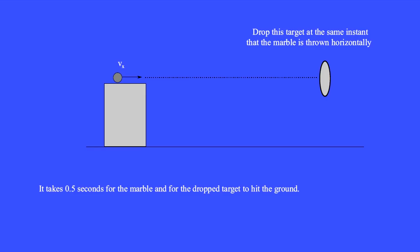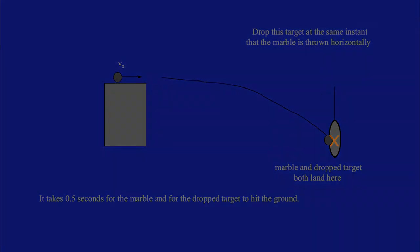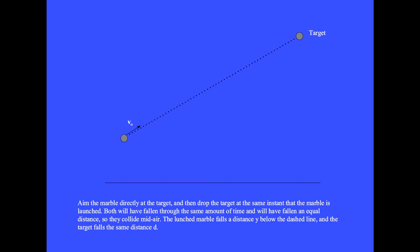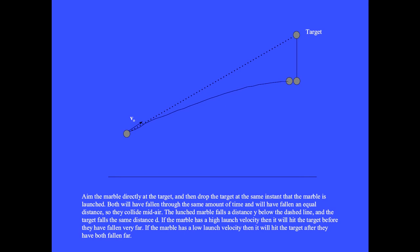One way to hit a target is to first aim horizontally straight at the target. At the same instant the marble is thrown horizontally, the target is dropped. Both the marble and the target will fall by the same distance. If the speed of the marble is really high, it will hit the target before they have dropped very far. If the speed is slower, then both will fall a greater distance before they meet. It works even when the target begins higher than the marble: the marble is thrown directly at the target, the target is dropped at the same instant, and both the marble and the target fall by the same vertical distance in equal times.